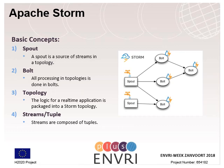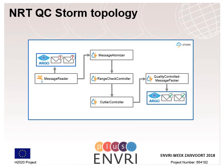We have implemented a dedicated near-real-time quality control Storm topology. A message reader spout subscribes to an Argo topic and retrieves the raw data from this message queue. A message atomizer bolt then splits the message data into individual atomic observations. These tuples are submitted to a range check controller bolt, which verifies the data value of an atomic observation against the instrument measurement range. An outlier controller bolt then performs an outlier check of each data value, initially based on a modified Z-score. These bolts add a quality-of-observation value to each atomic observation to indicate if a value has passed or failed the quality control check.